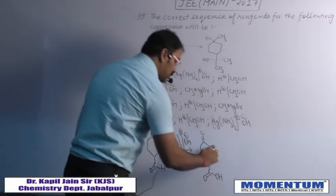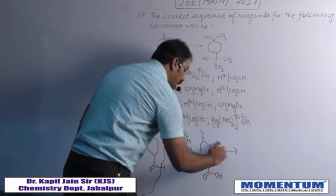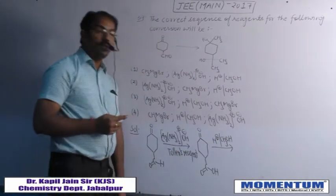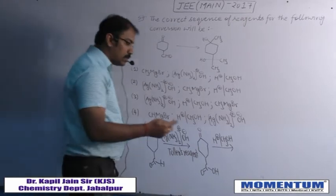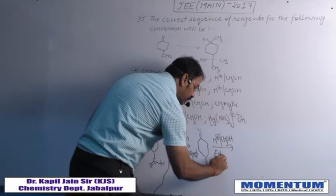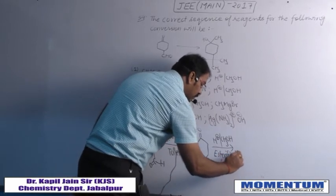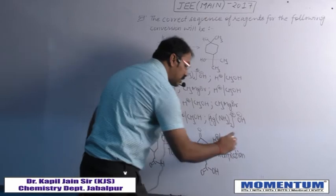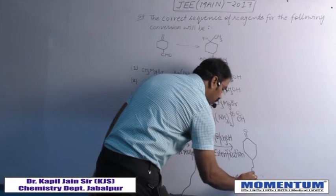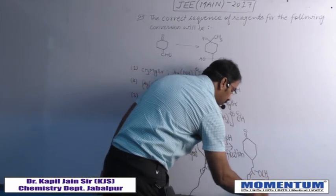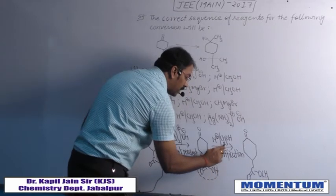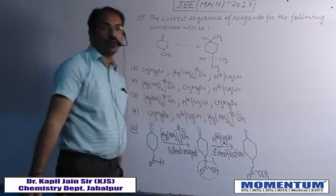Next, if we react the product with H⁺ in the presence of methanol — acidic medium with methanol — this is an esterification reaction. The carboxylic acid reacts with the alcohol in acidic medium, and the end product will be the ester (–COOCH₃).